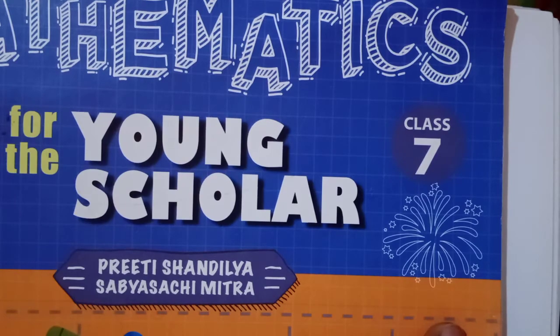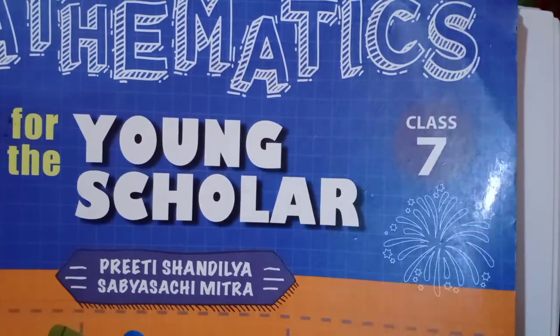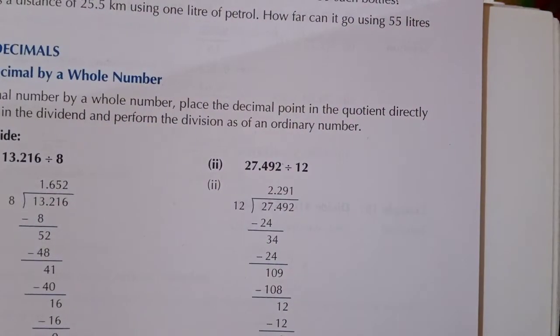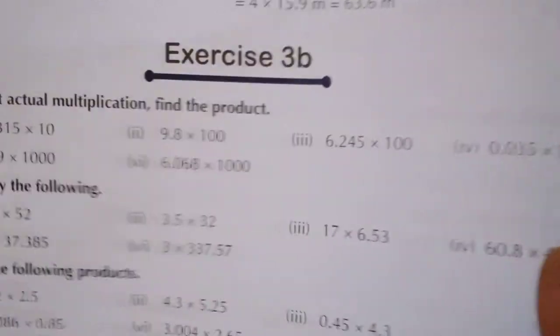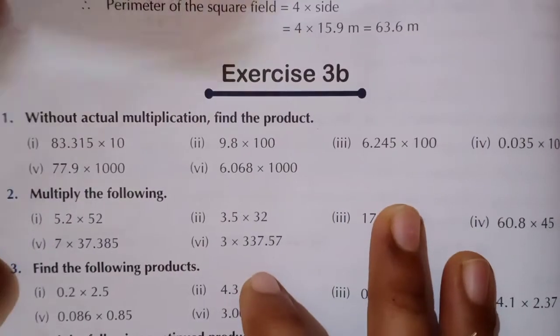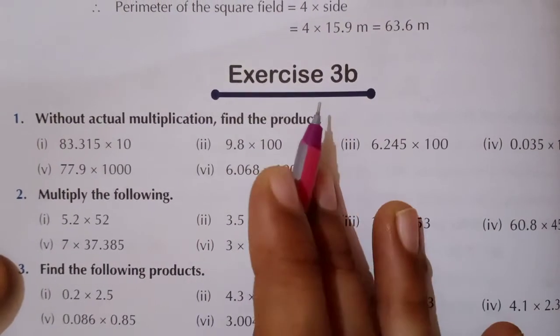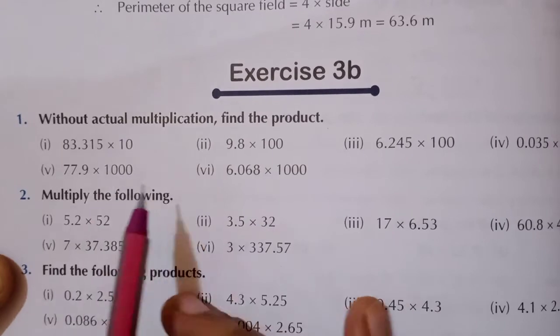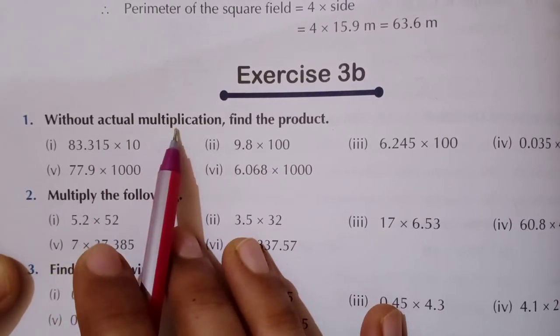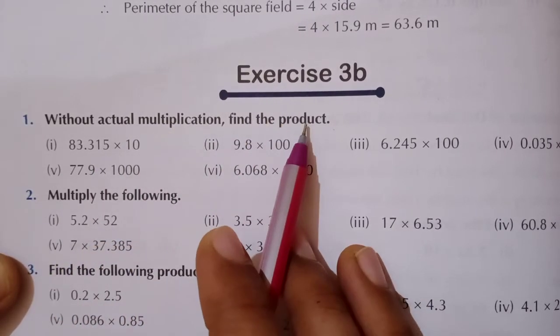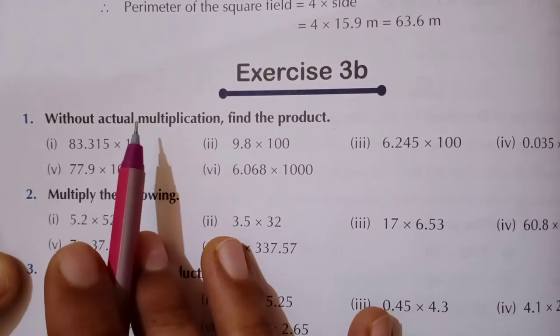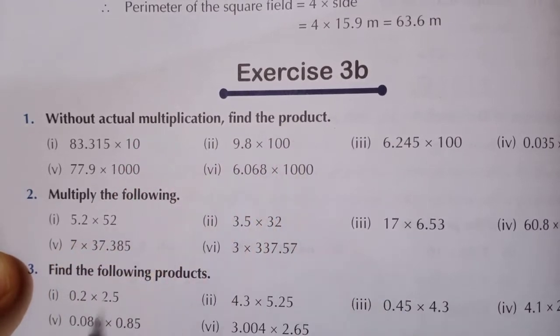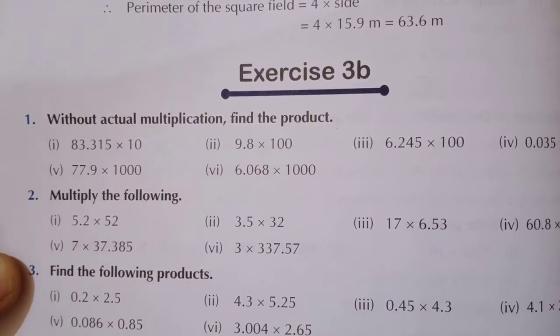Now let's see what we have to do in Exercise 3b. Exercise 3b is regarding multiplication. This is the first question — without actual multiplication, you have to find the product. Without doing the actual multiplication, you will find out the product. Let's see how we will do these questions.